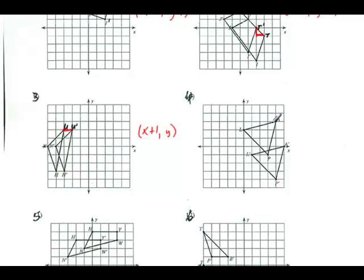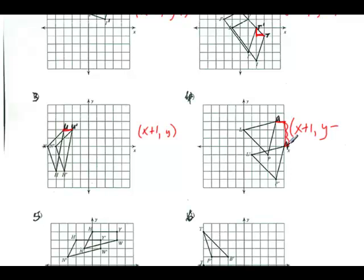Number four: here's my original triangle. Here's point A, and I'm going to A prime. It looks like I'm going to the right and then down. For X, going right is plus, and I went one spot: X plus 1. For Y, going down is minus, and I go one, two, three spots: Y minus 3.